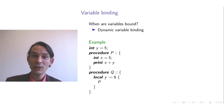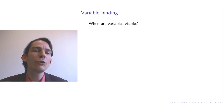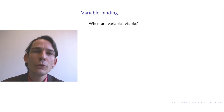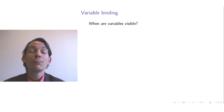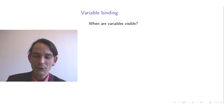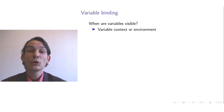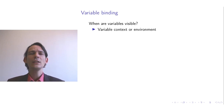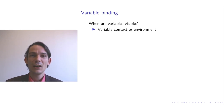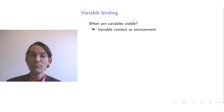Another notion related to variable bindings is visibility. At any position in the program text, you can ask what other variables are visible — this is typically called the variable context or the environment. When speaking about environments, you indicate a position in the program text and ask what variables are visible at that point, i.e., to what variables could an occurrence placed there be bound. I will show an example.